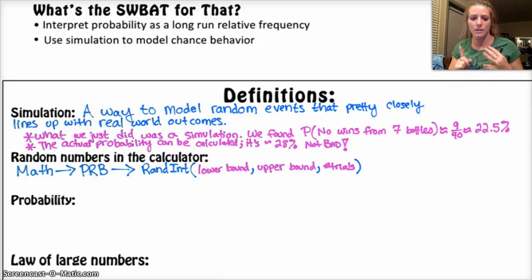Random numbers in the calculator: math, prob, random, to put your lower bound, your upper bound, number of trials or the number of random numbers that you want.